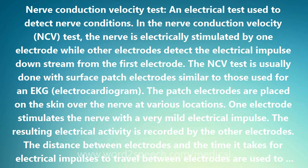The NCV Test is usually done with surface patch electrodes similar to those used for an EKG electrocardiogram. The patch electrodes are placed on the skin over the nerve at various locations. One electrode stimulates the nerve with a very mild electrical impulse. The resulting electrical activity is recorded by the other electrodes. The distance between electrodes and the time it takes for electrical impulses to travel between electrodes are used to calculate the speed of impulse transmission.